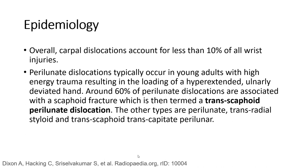Carpal dislocations account for less than 10% of wrist injuries. Perilunate dislocation typically occurs in young adults with high energy trauma resulting in loading of the hyperextended wrist. Around 60% of perilunate dislocations are associated with a scaphoid fracture, which is then termed transcaphoid perilunate dislocation. Other types include perilunate, trans-radial styloid, transcaphoid, and transcapitate perilunate.